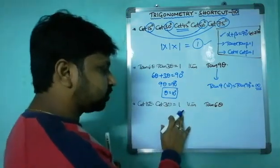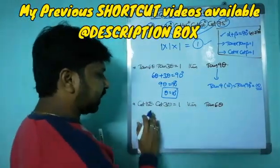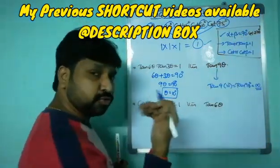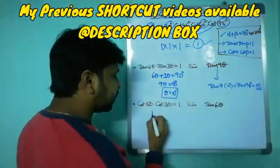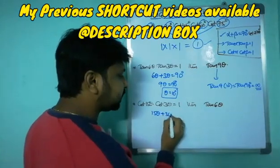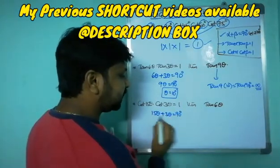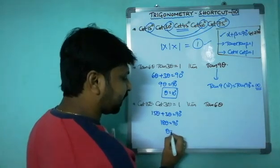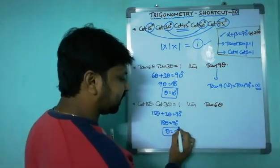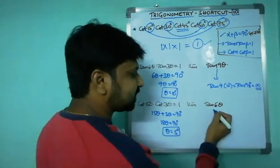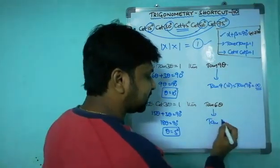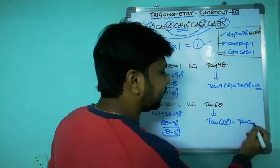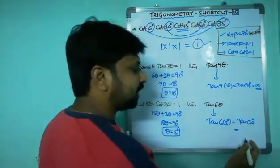Next question: cot 15θ × cot 3θ = 1, find tan 6θ. Using cot α × cot β = 1 means α + β = 90°. So 15θ + 3θ = 90°, giving 18θ = 90°, therefore θ = 5°. They ask for tan 6θ = tan(6 × 5°) = tan 30° = 1/√3.